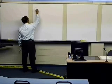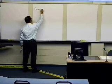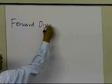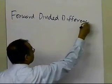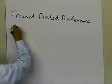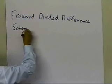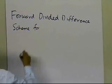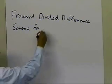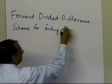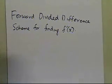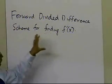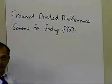In this segment, we're going to talk about the forward divided difference scheme, or method, for finding the derivative of a function. In this case we're talking about continuous functions, so we want to use the forward divided difference scheme for finding the derivative of a function.